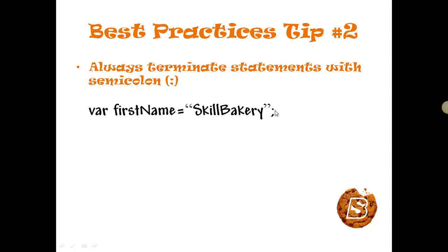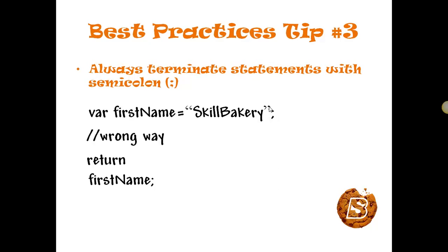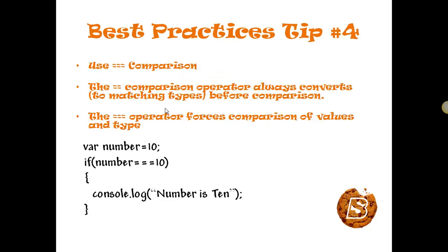Tip number two: we should always terminate statements with a semicolon. As you can see, we are terminating with a semicolon symbol. If we forget to put a semicolon, JavaScript automatically implies one. For example, if we write 'return' and then on a new line 'firstName' terminated by a semicolon, this will be wrong because 'return' will be automatically terminated by JavaScript.